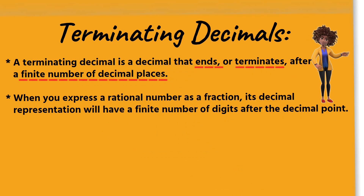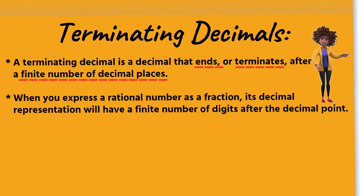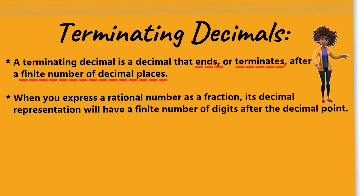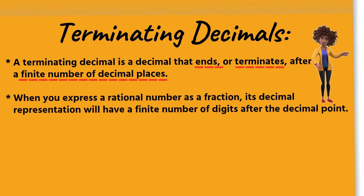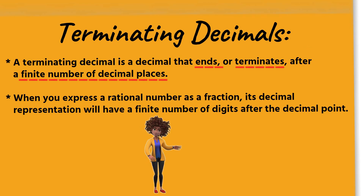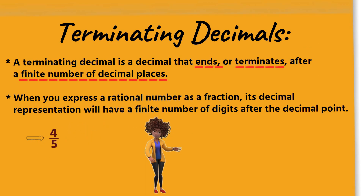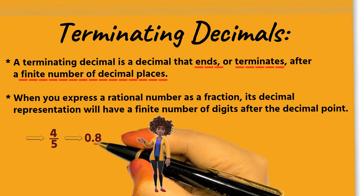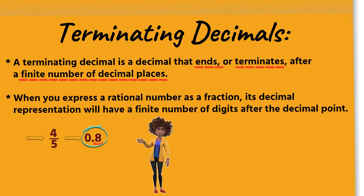Terminating decimals: a terminating decimal is a decimal that ends, or terminates, after a finite number of decimal places. When you express a rational number as a fraction, its decimal representation will have a finite number of digits after the decimal point. For example, the rational number 4 over 5, when expressed as a decimal, becomes 0.8, which terminates after one decimal place.